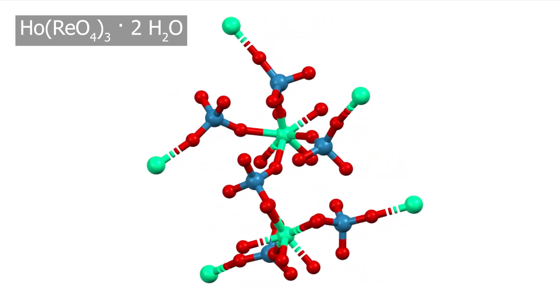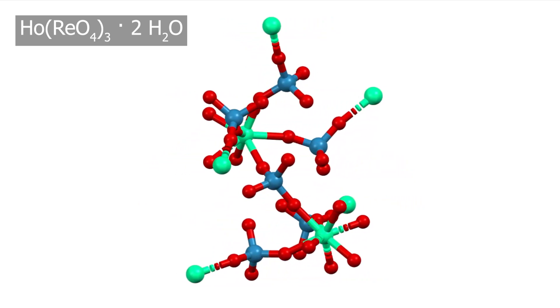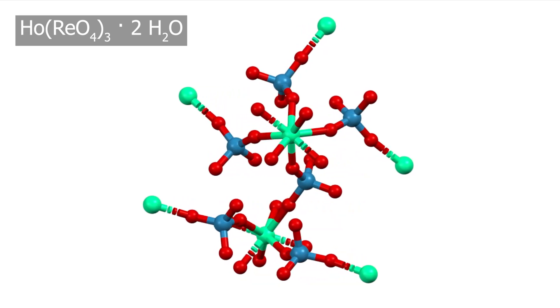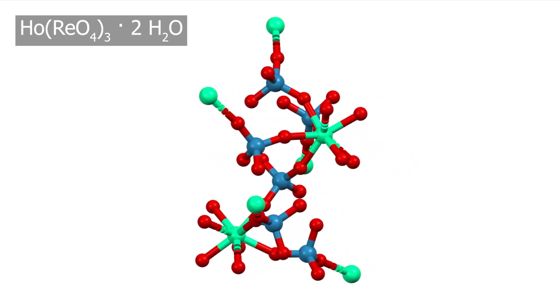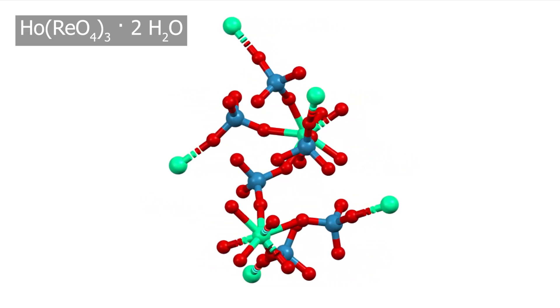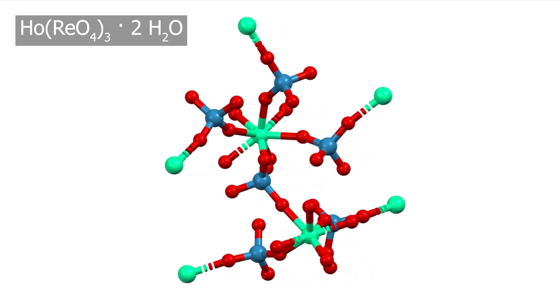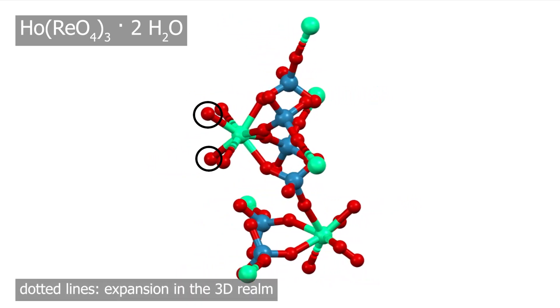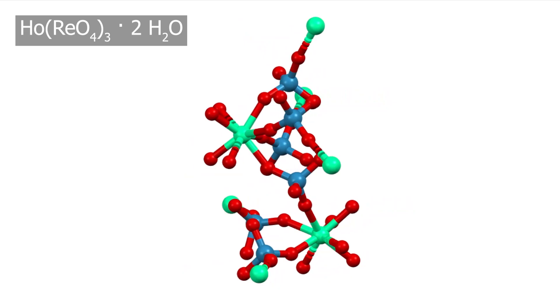If everything went well, you will get great crystal structures like these. So the green is the lanthanide. In this case, it's Holmium 3+, the red are oxygen atoms and the blue is the rhenium atom. Hydrogen atoms are not shown here, but you can clearly see how two water molecules of the dihydrate are coordinated to the holmium.